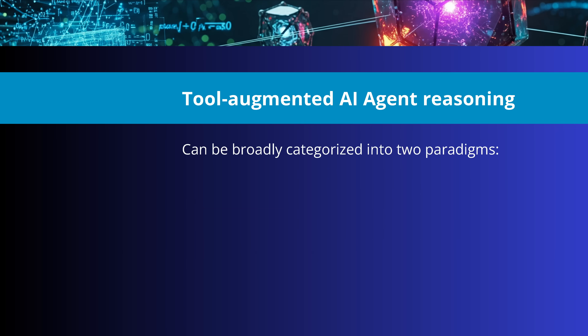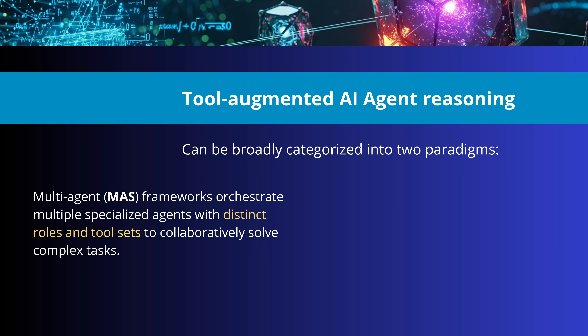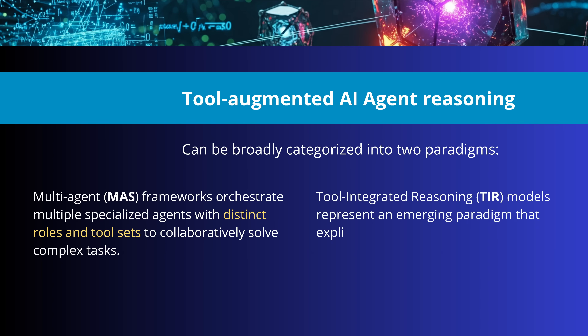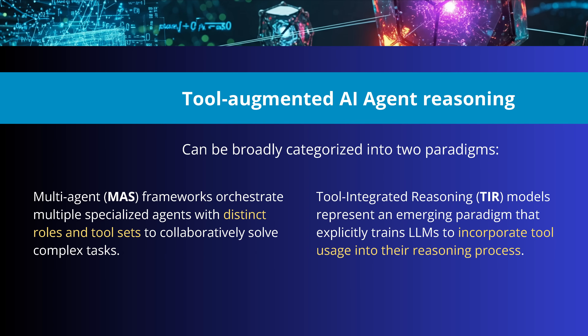We can broadly categorize this into two different paradigms. The first is a multi-agent framework where we have multiple specialized agents with a distinct role and a distinct tool set, trained to collaboratively solve complex predefined tasks. On the other hand, we have tool-integrated reasoning models that represent an emergent paradigm explicitly training LLM systems to incorporate tool usage into their reasoning process.